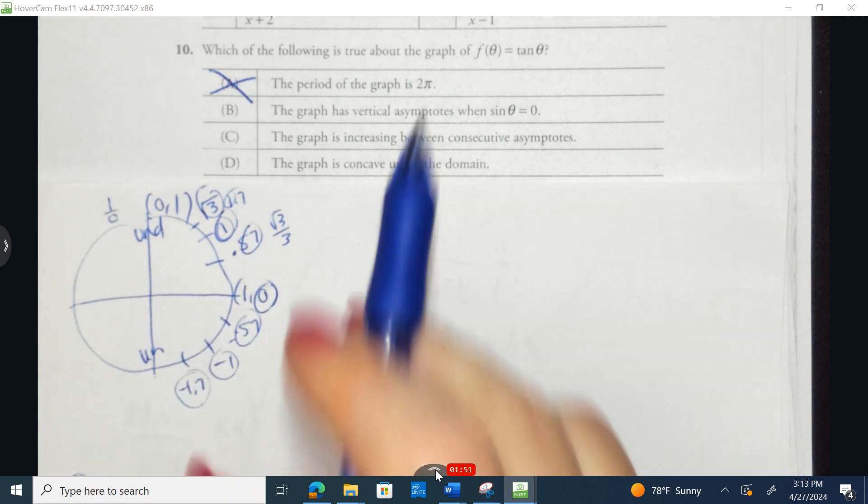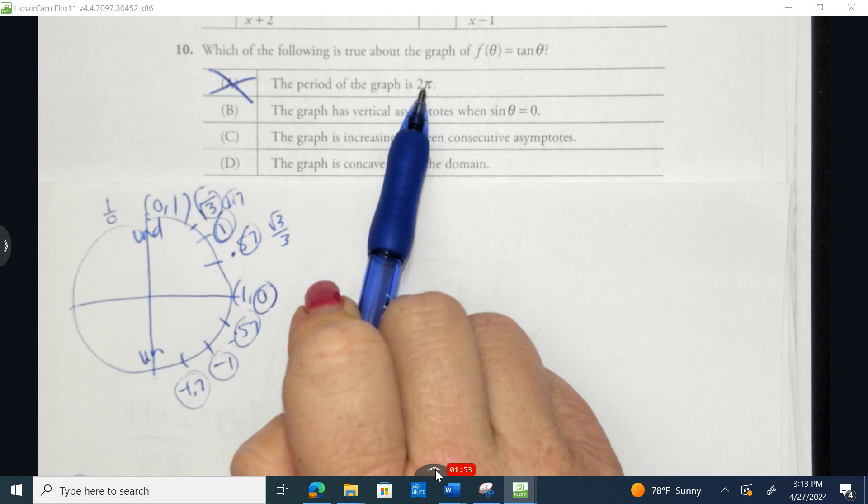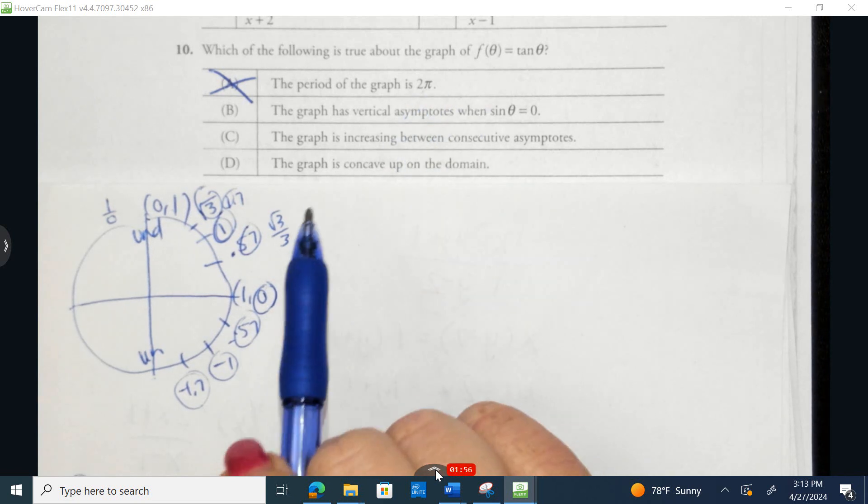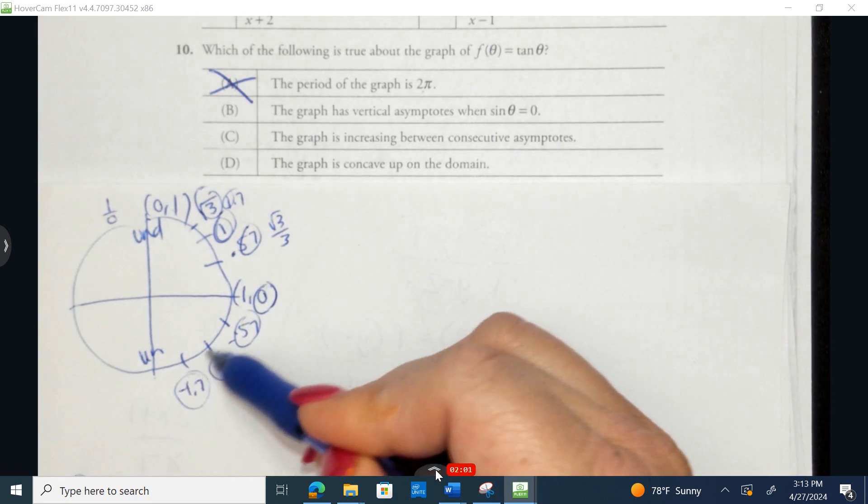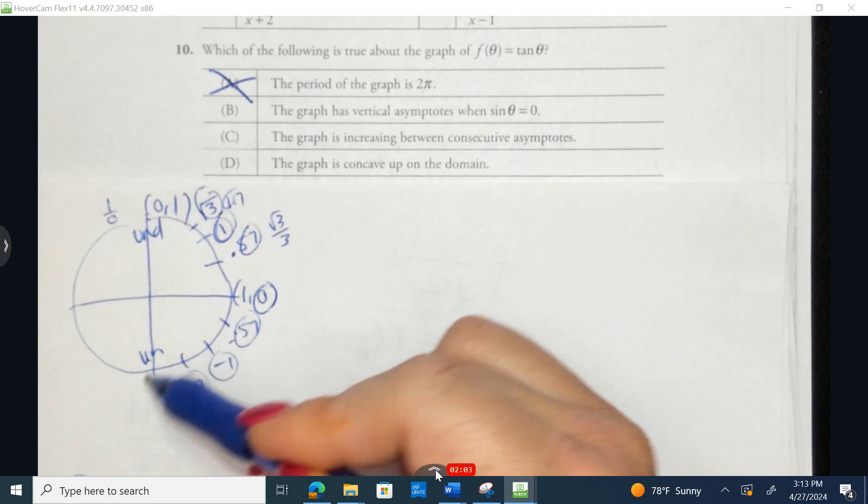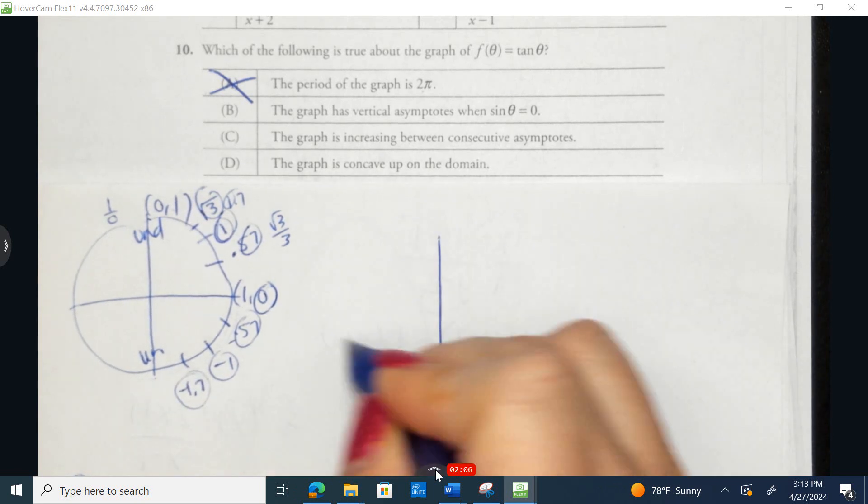So I know, as I just spoke about, that the period length for tangent is a length of π, and notice that π is going to be 180 degrees. So from here to here, when I graph it, it's coming from here to here.